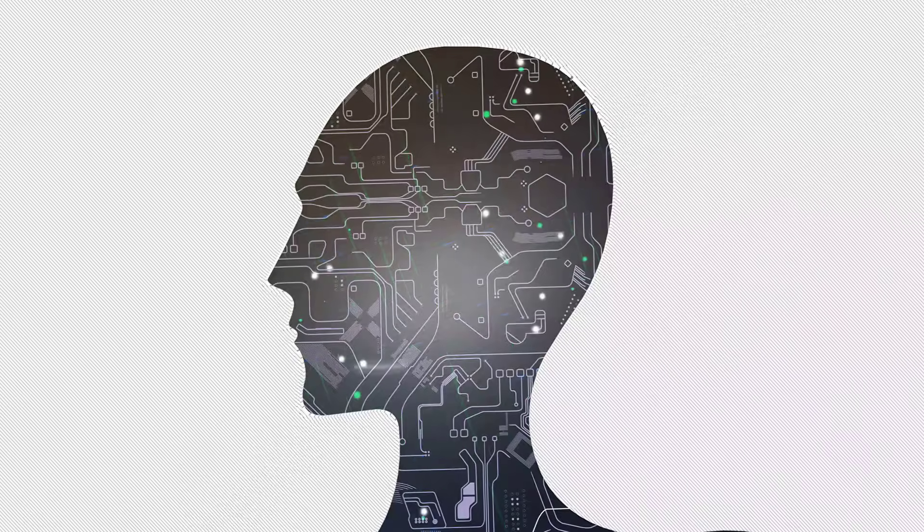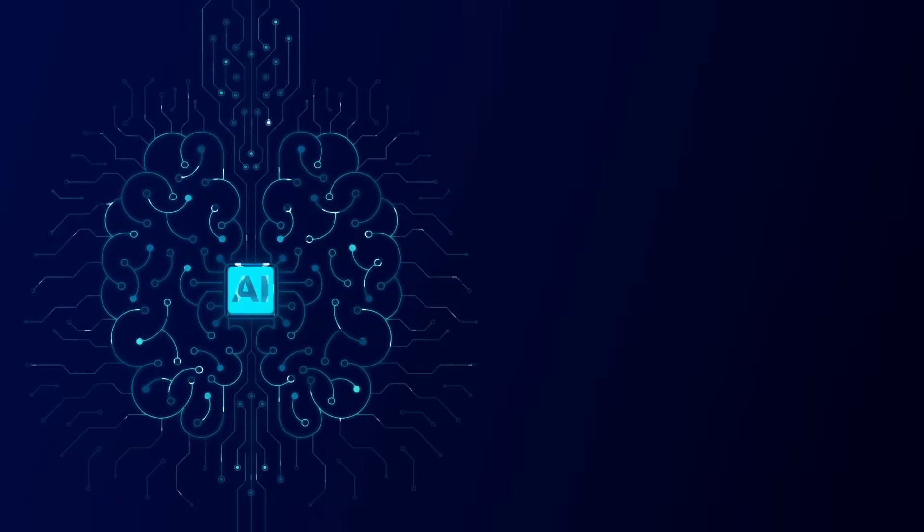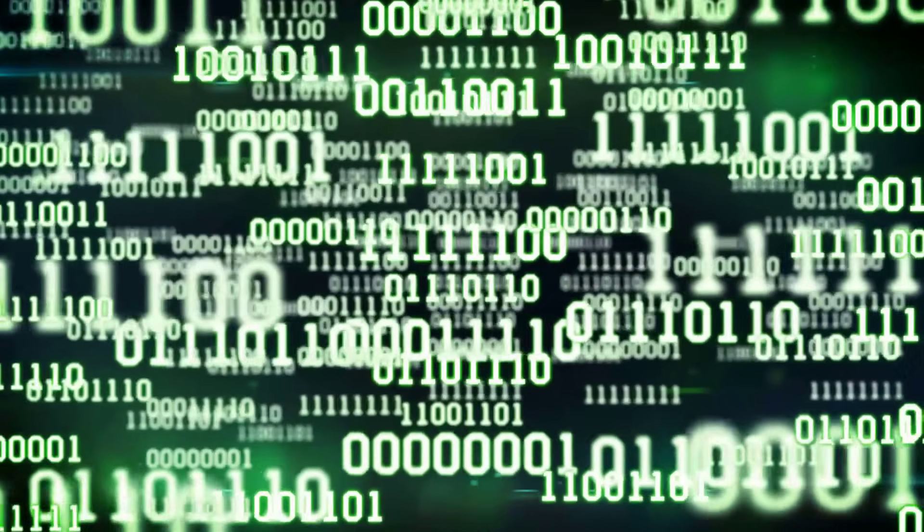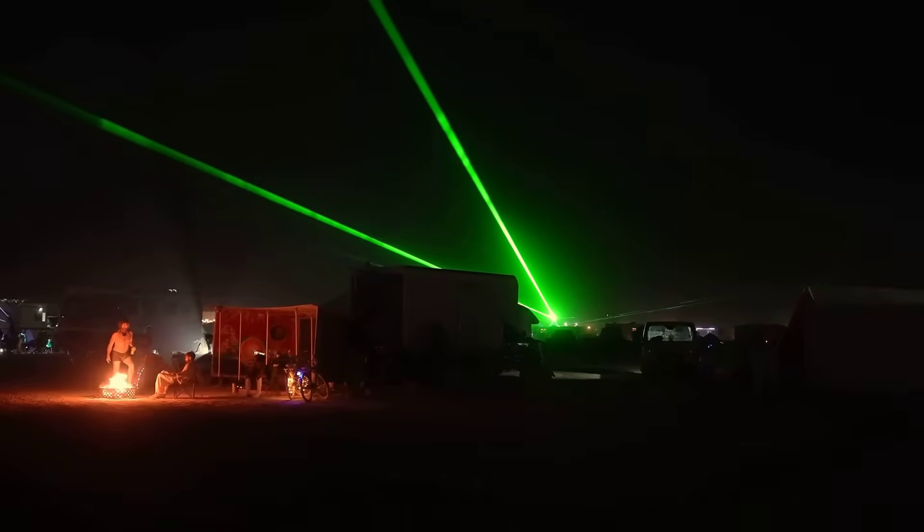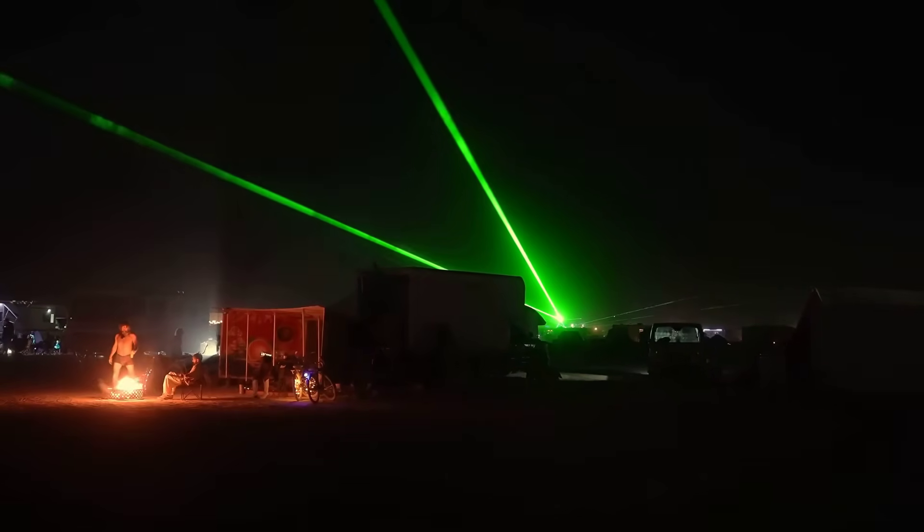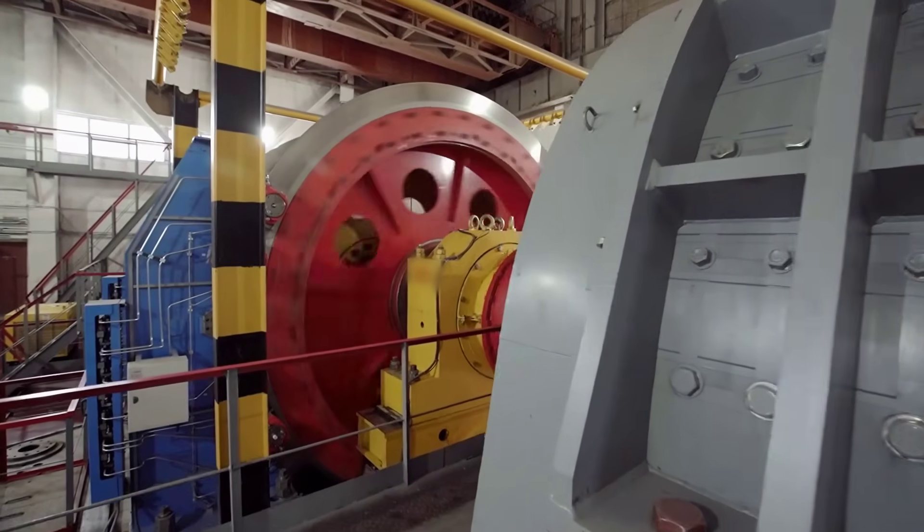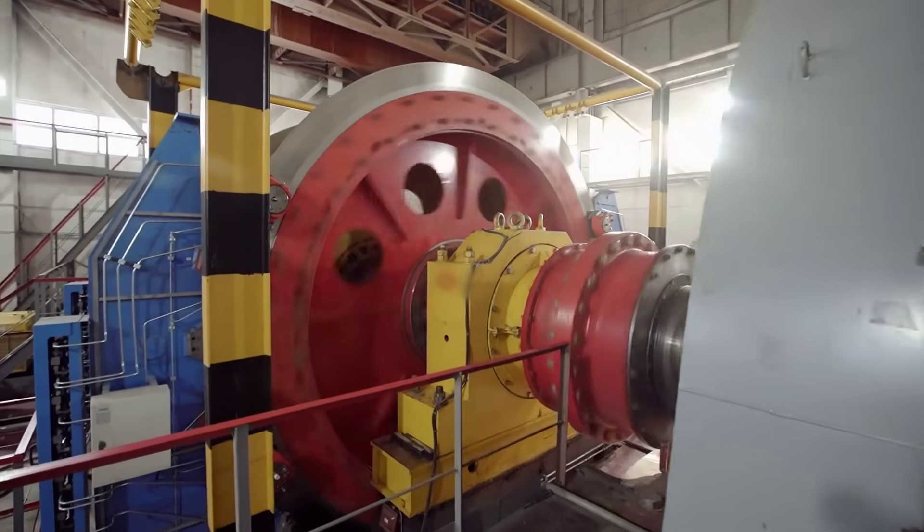Okay, so if analogue AI is so amazing, why isn't it everywhere? Why is everyone still using digital? Great question. Analogue AI has some serious challenges. Challenge number one. Precision. Digital is exact. One is always one. Zero is always zero. Analogue is inherently noisy. It's like the difference between a laser pointer and a flashlight. Analogue AI has to deal with variations in temperature, voltage fluctuations, manufacturing imperfections.